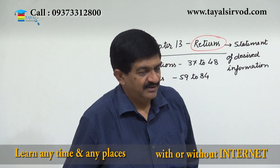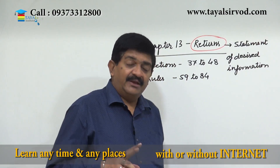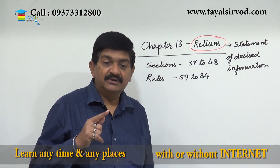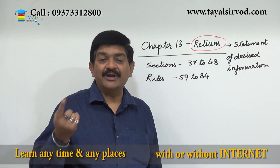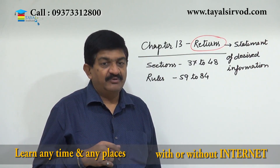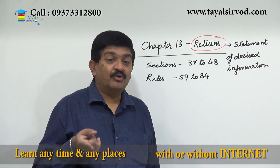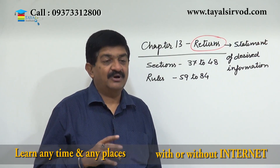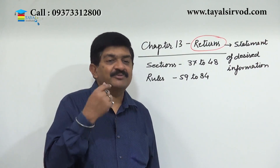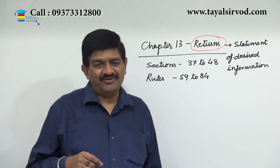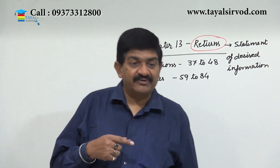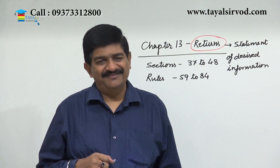First, to what extent is the registered person eligible to avail the credit? Then, that credit is utilized for discharging the output liability. What is the total output or other output supplies? On the basis of that there is a computation, and the output supply of one person is an input supply for another person.